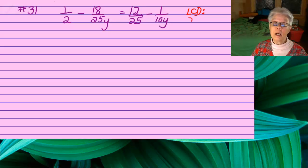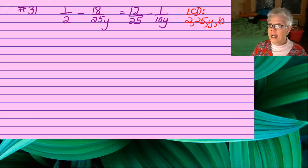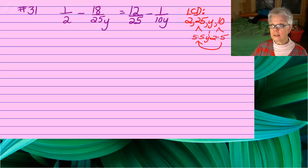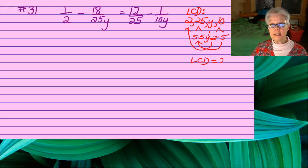We're going to choose an LCD, a common denominator that will cancel out all of those individual denominators. We have 2, 25, y, and 10. The 25 breaks down into 5 times 5, and the 10 breaks down into 2 times 5. We need a number that will cancel out the 2, two 5s, and a y. So we need a common denominator large enough to cancel out those numbers, and that's going to be 2 times 5 times 5 times y, which is 50y.